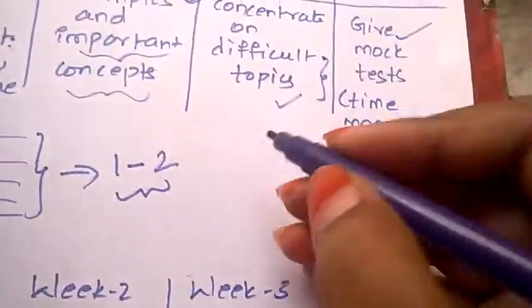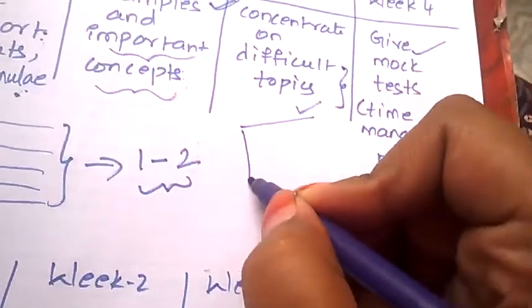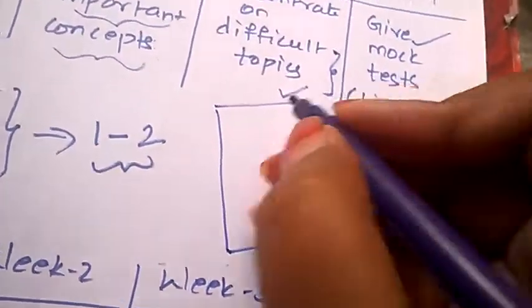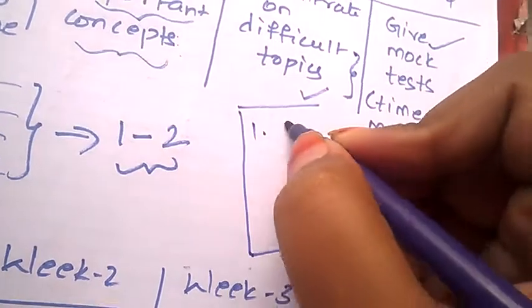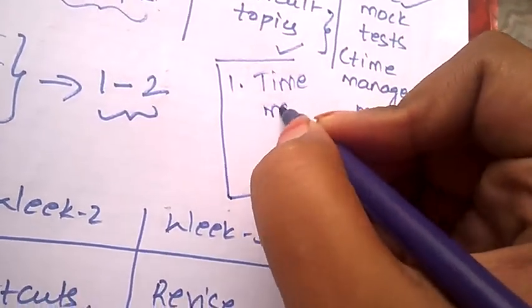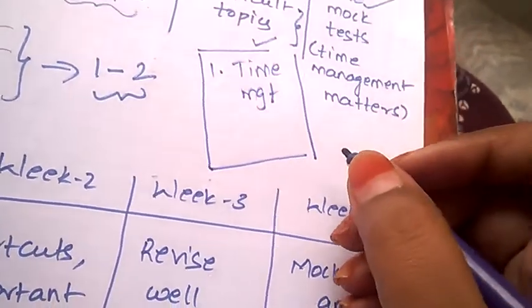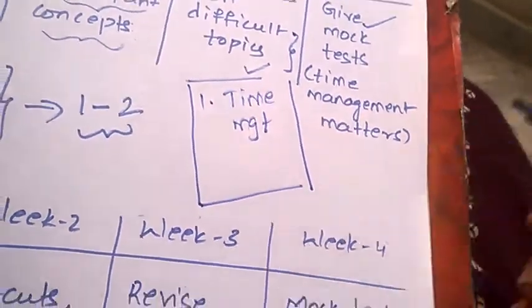These are a few tips which I am going to give now which will be very useful for the CAT aspirants. First tip is time management. You should learn how to manage the time and you need to solve all the sections within a given limit of time.